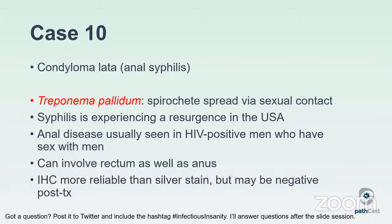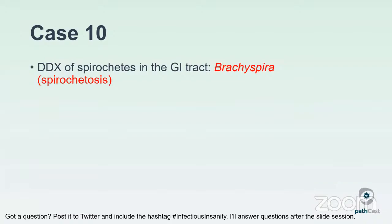The differential of spirochetes in the GI tract is fairly limited. The other option is intestinal spirochetosis, caused by Brachyspira, which presents as a fuzzy hair-like rim along the epithelial surface of the intestinal tract. This is usually incidental, causing no to mild symptoms and no to mild changes in the actual tissue.